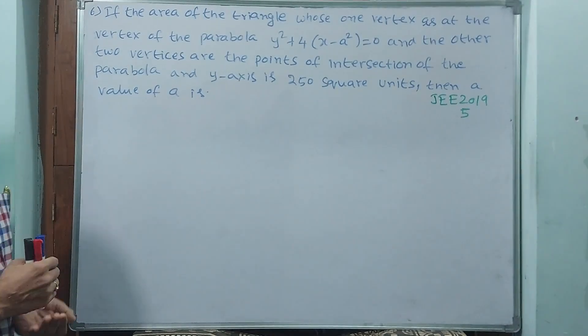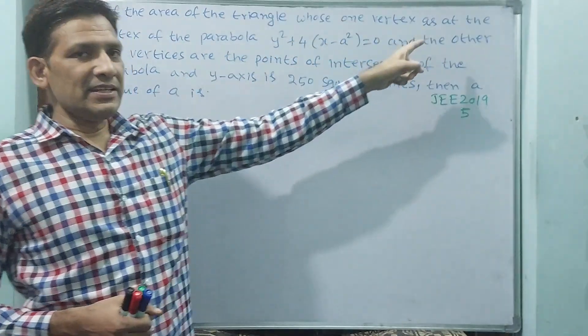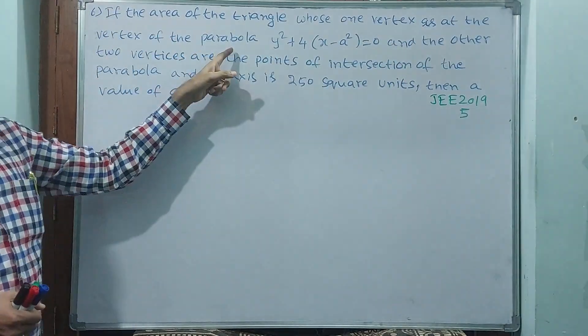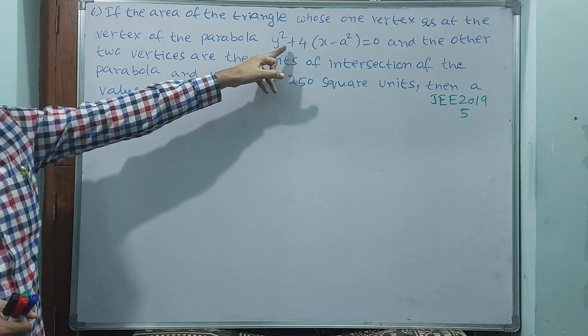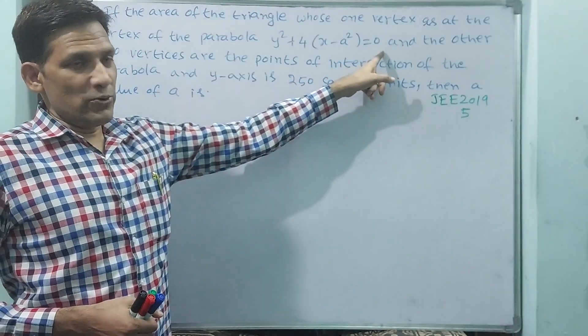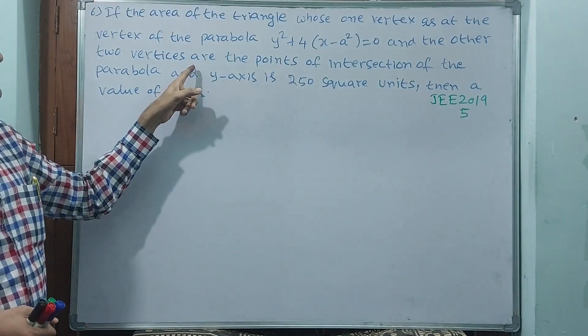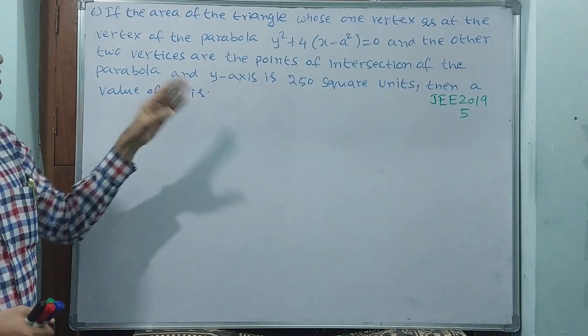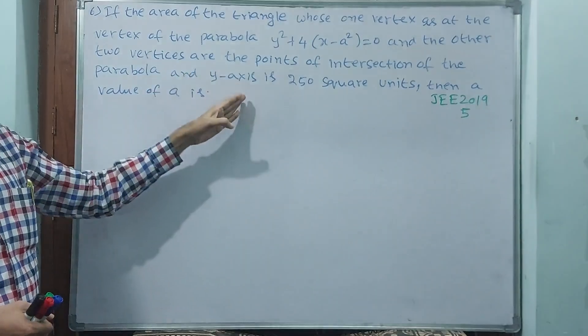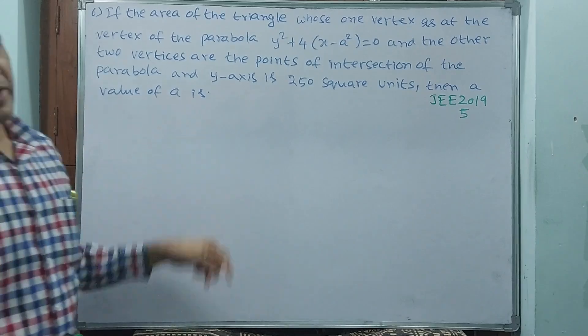Okay, see question number 6. If the area of the triangle, where one vertex is at the vertex of the parabola, the parabola is y square plus 4 into x minus a square equal to 0, and the other two vertices are the points of intersection of the parabola and y axis. The area is 250 square units. Then what is the value of k?